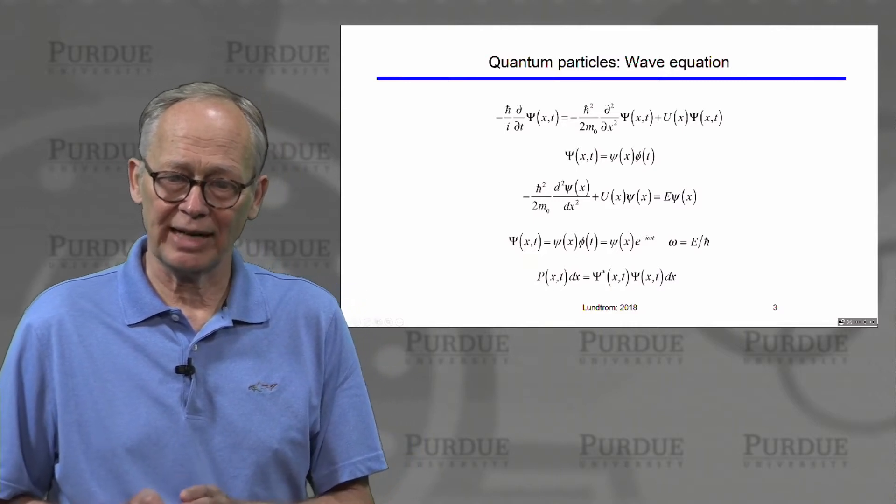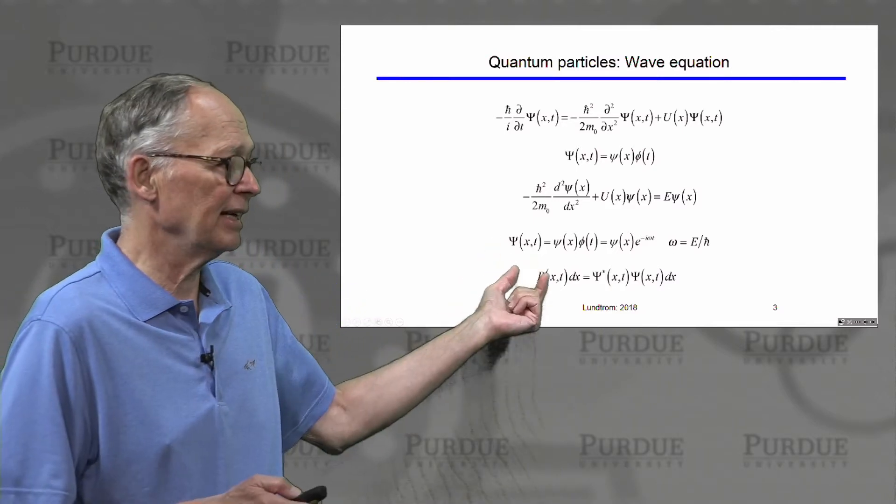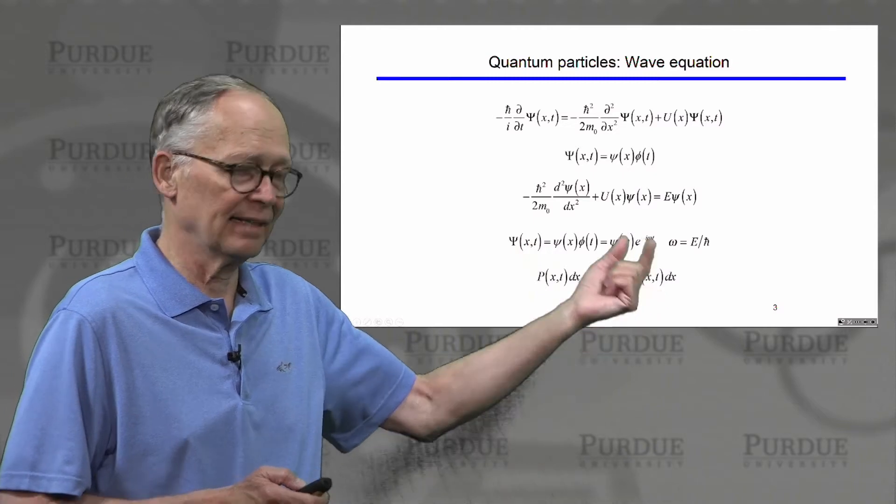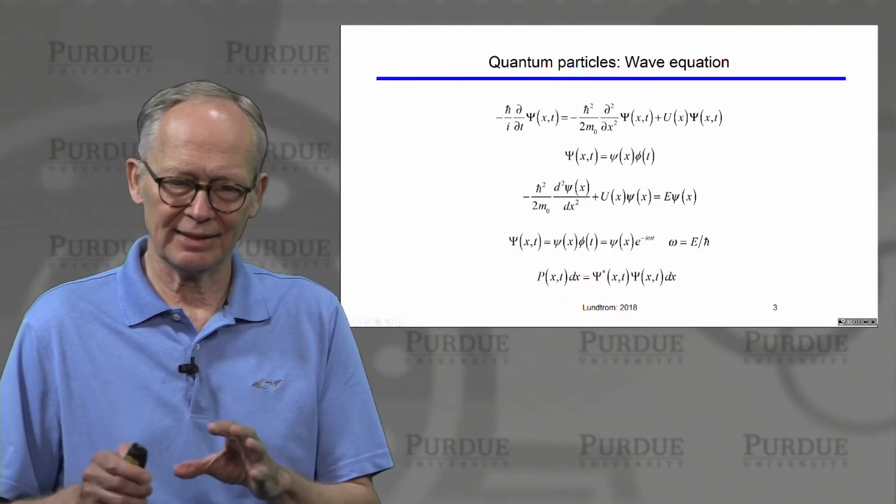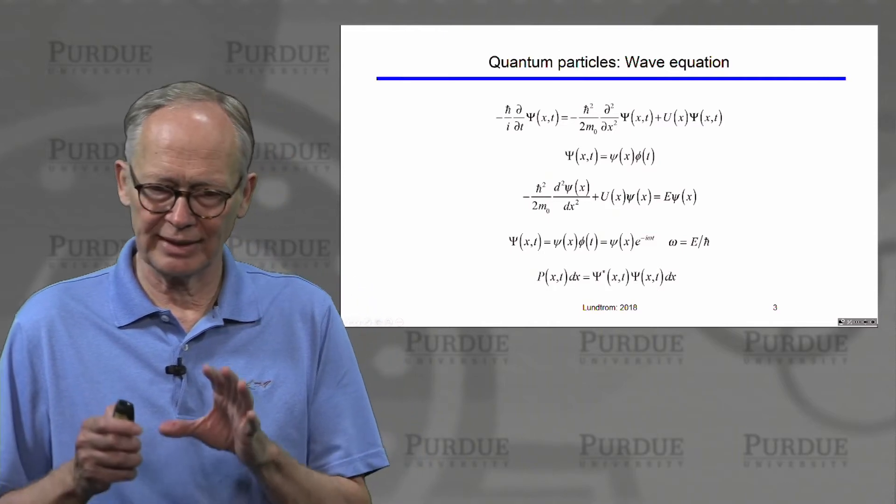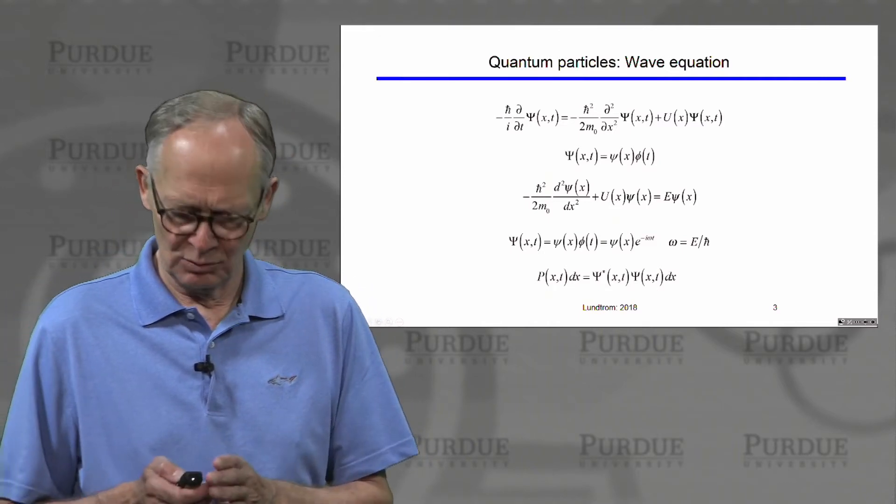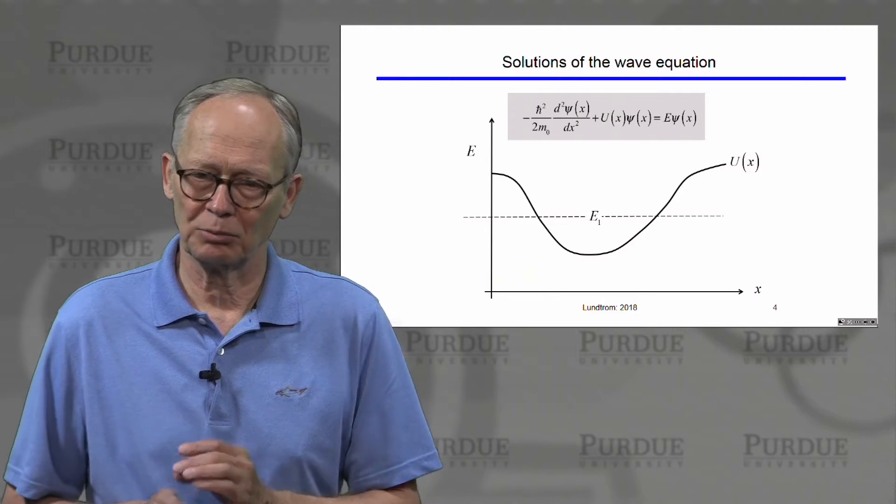The probability of finding a particle in a region dx is equal to psi star psi times region dx. So this is the basic fundamentals of quantum mechanics, and this is where we begin when we try to understand quantum mechanical particles.